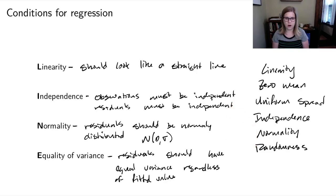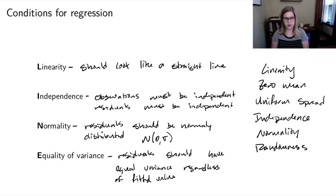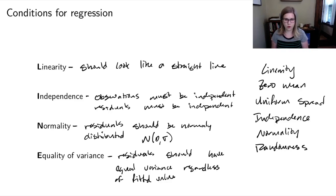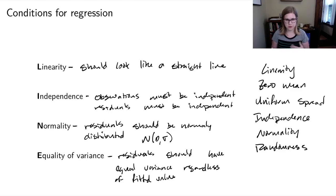Randomness fits into my independence condition — observations need to be independent, which requires them to be randomly sampled. Also, when thinking about variance, you want it to look random and not show some kind of pattern. These conditions are really important when doing regression to avoid inferential mistakes.